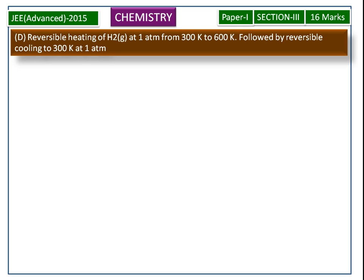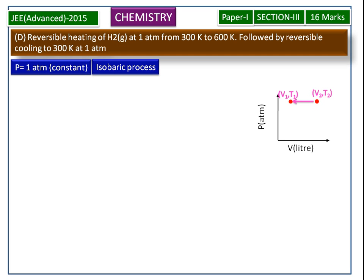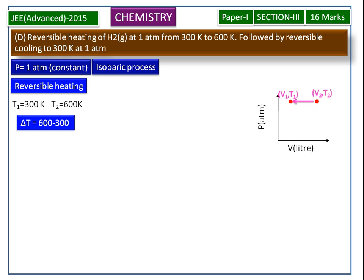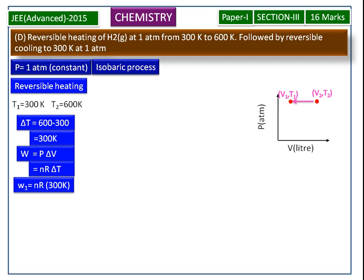Next we see the D process: reversible heating of H₂ gas at 1 atmospheric pressure from 300 Kelvin to 600 Kelvin, followed by reversible cooling to 300 Kelvin at 1 atmospheric pressure. Because pressure is constant, this is an isobaric process. For reversible heating, the change in temperature is 300 Kelvin. W is equal to P·delta V, and since PV = nRT, this becomes W₁ = nR × 300 Kelvin.